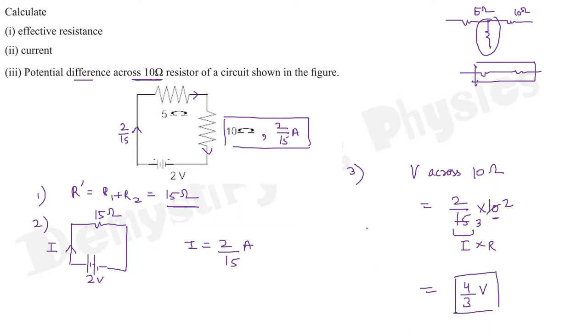Though it's not asked in the question, if you have been asked voltage across 5 ohm, it would be 2/15 into 5, which gives 2/3 volt. You may check that the sum of these two voltages V1 and V2, which is 2/3 and 4/3, comes out to be 6/3 which is 2 volt. So this 2 volt is divided between the 5 and 10 ohm resistors. Just for verification: 2/3 plus 4/3 = 6/3 = 2 volt. So our calculations are correct.